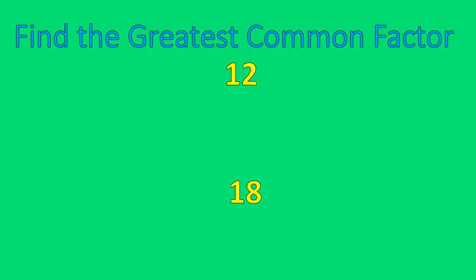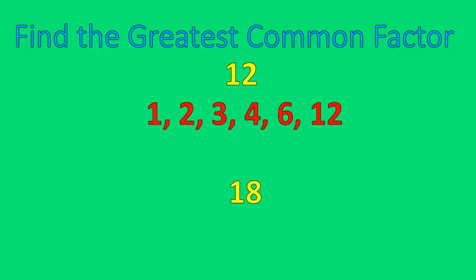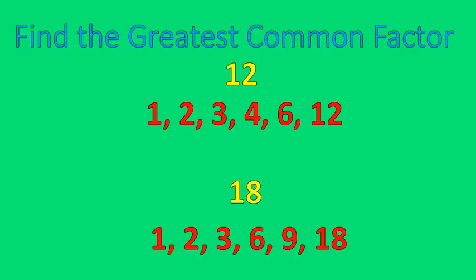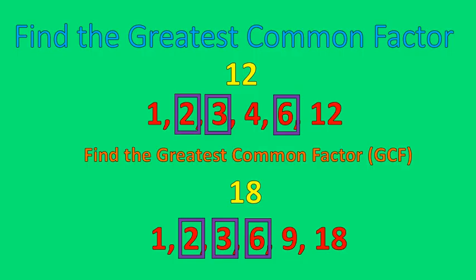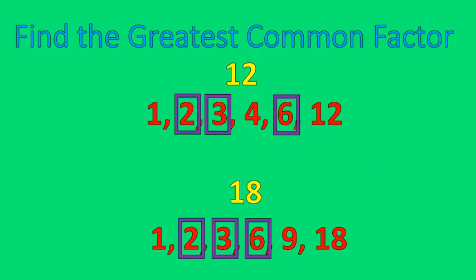Here's one you can actually answer — go ahead and pause the recording and find the greatest common factor between those two numbers. 12 has a lot of factors, which is why it's used so much. Let's take a look: factors of 12 are 1, 2, 3, 4, 6, and 12; factors of 18 are 1, 2, 3, 6, 9, and 18. The common factors are 2, 3, and 6, and the greatest common factor is 6.